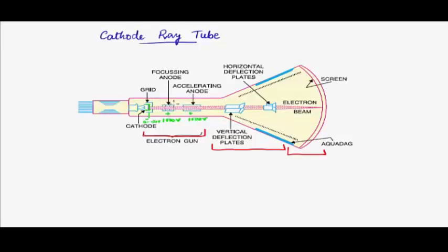The number of electrons passing changes, resulting in different brightness of the impact on the screen. To summarize: the anode focuses and accelerates; the grid controls the amount of electrons flowing; the cathode generates the electrons; and the filament heats the cathode. To increase electrons, we can either raise the cathode temperature or bring the grid voltage to 0 volts. This is the electron gun part.